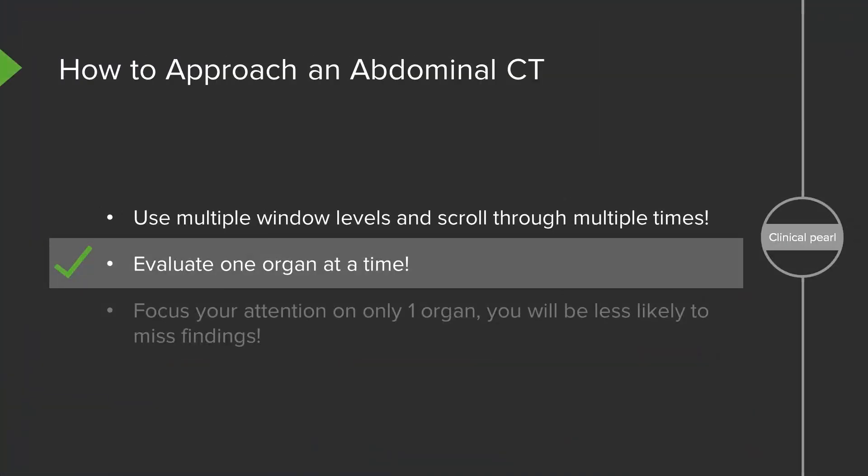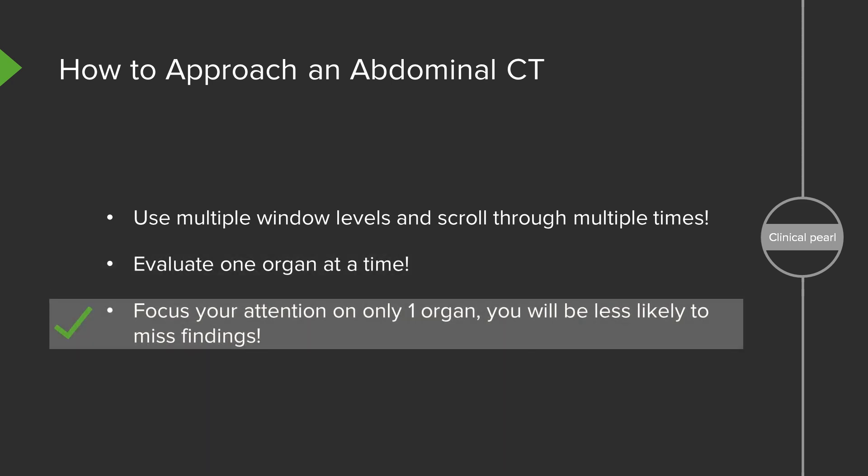It's important to evaluate only one organ at a time. The abdominal CT scan has a lot of different organs, and if you try to look at everything at once, it's very likely that you'll miss something. So it's important to take a look at one organ at a time and scroll through multiple times through that organ before moving on to the next one. By focusing on only one organ, you'll be less likely to miss findings.